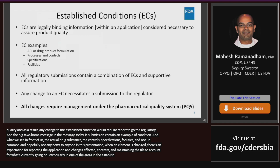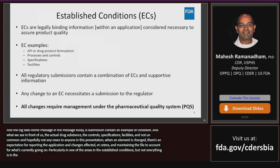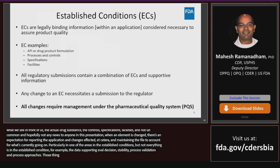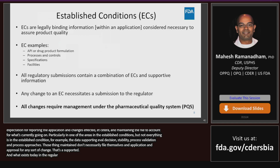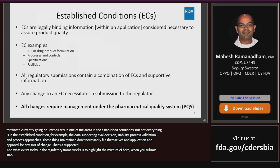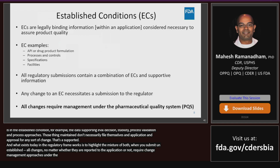Not everything in the application is an established condition. For example, data supporting method validation, stability, or process validation — when those are maintained, they don't themselves necessitate a filing to gain approval from the regulator for any sort of change. We would consider that more supportive information. A real important message when it comes to Q12 implementation is that all changes, no matter whether they're reported to the application or not, require change management approaches under the pharmaceutical quality system.